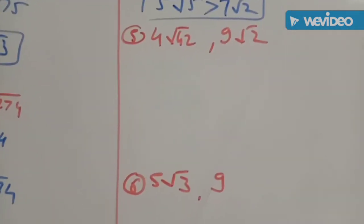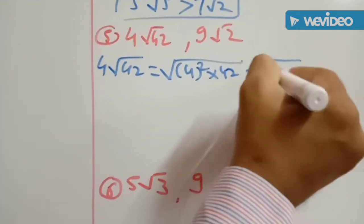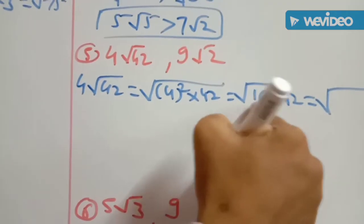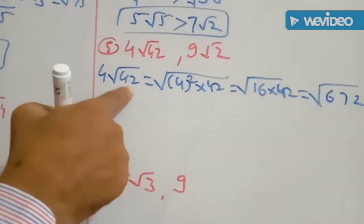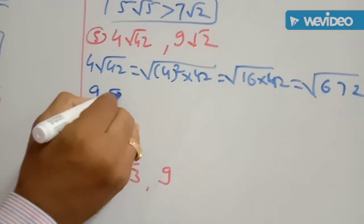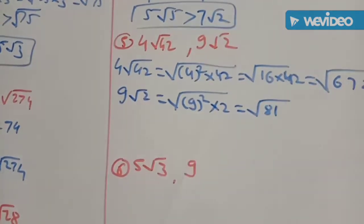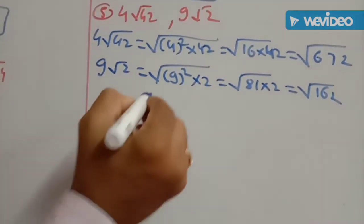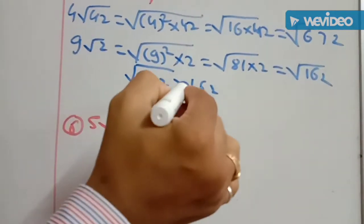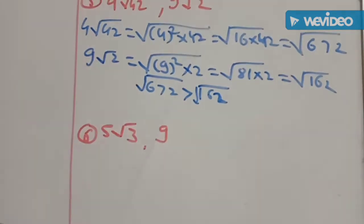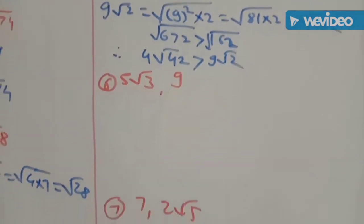Fifth pair: 4 root of 42 and 9 root of 2. For 4 root of 42: square root of 4 squared into 42 equals root of 16 into 42. 16 into 42 equals 672. For 9 root of 2: square root of 9 squared into 2 equals root of 81 into 2, which is root of 162. Since 672 is greater than 162, root of 672 is greater than root of 162, meaning 4 root of 42 is greater than 9 root of 2.